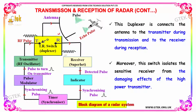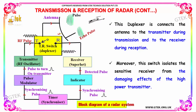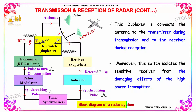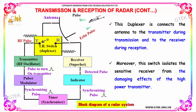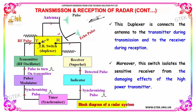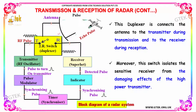This Duplexer is connected to the antenna: to the transmitter during transmission, and to the receiver during reception. Moreover, the switch isolates the sensitive receiver from the damaging effects of the high-power transmitter.